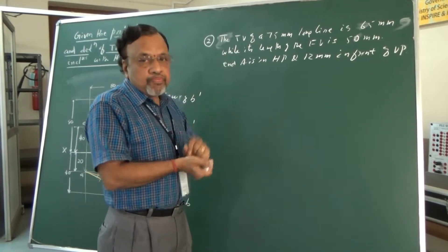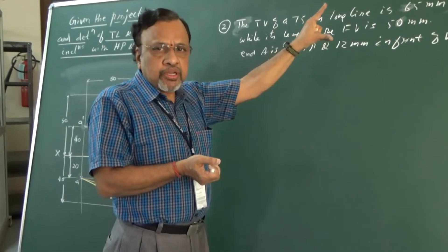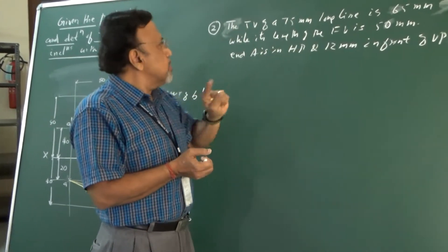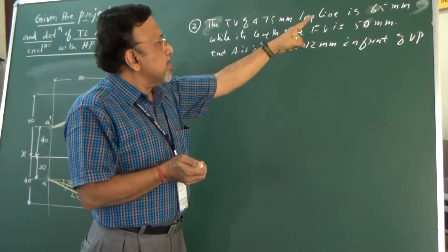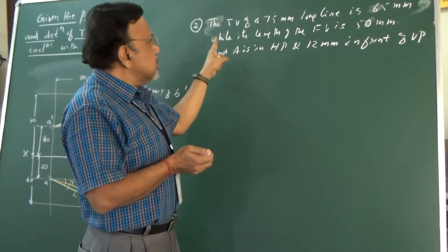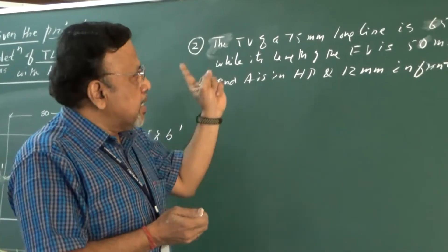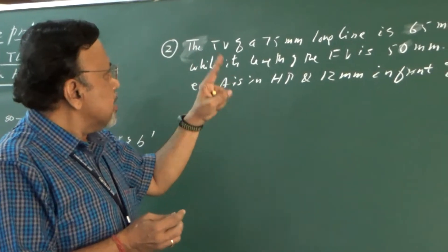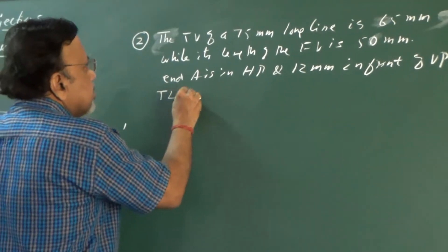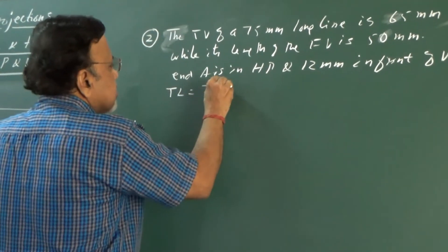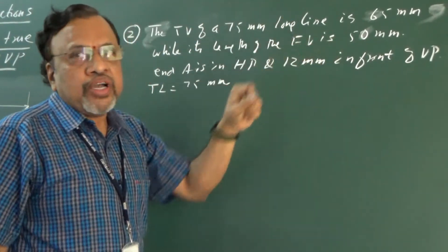Let me continue with the next problem. Let us see the data given in this particular problem. It is given that the top view of a 75 mm long line is 65 mm. This sentence means that the true length of the line is 75 mm, and the top view measures 65 mm.